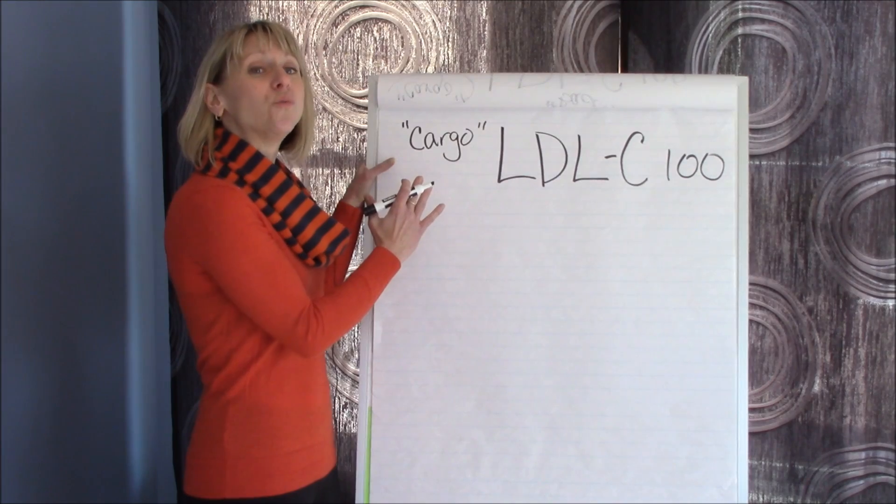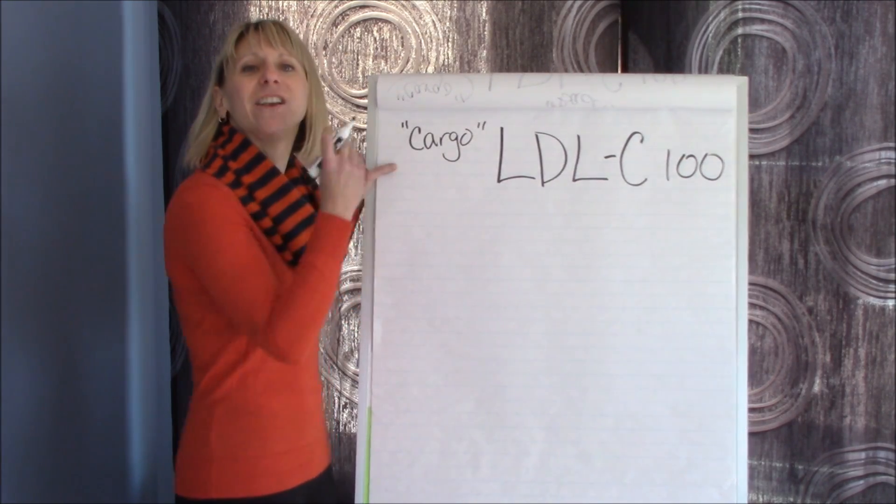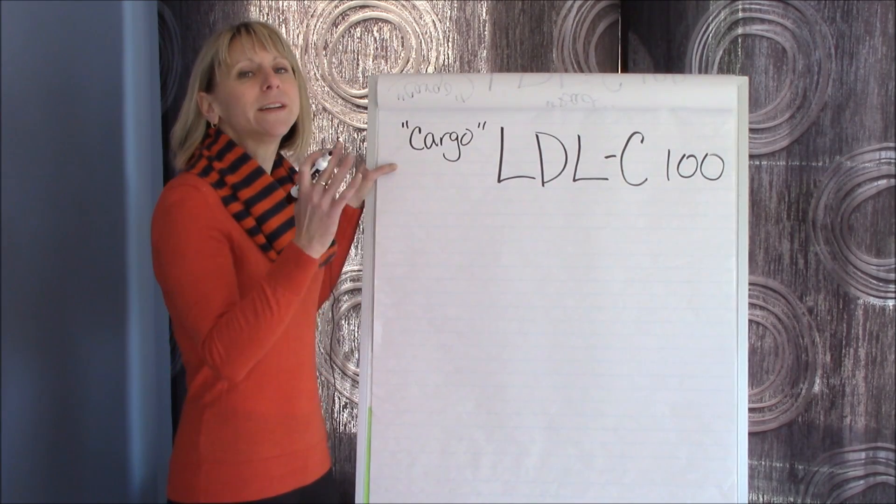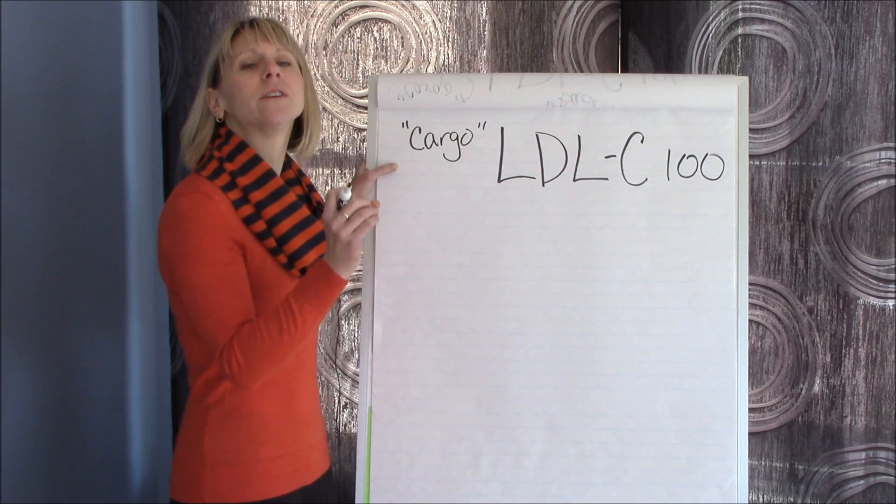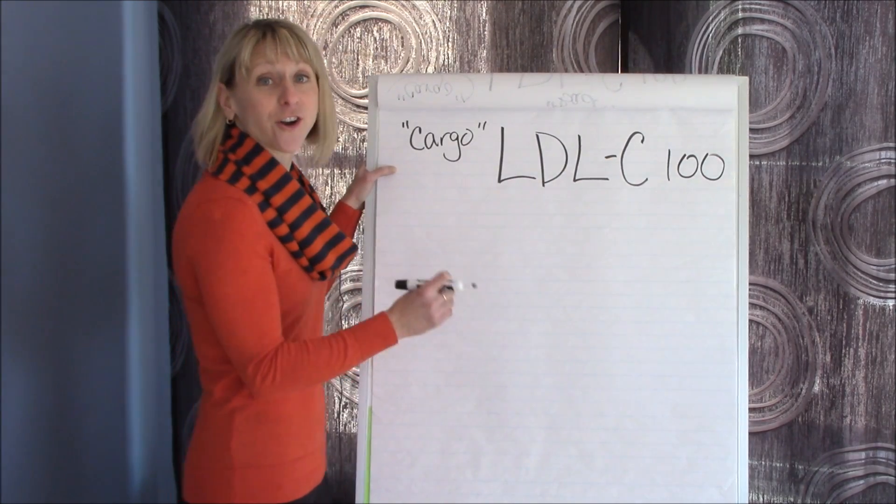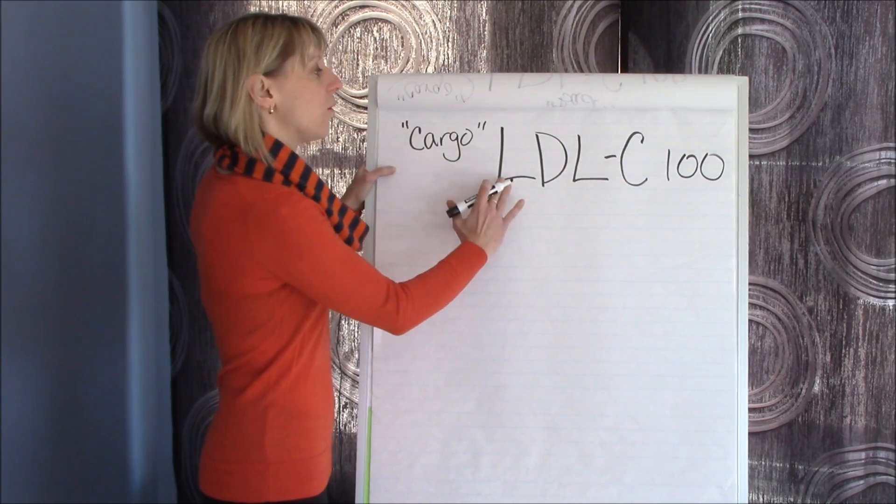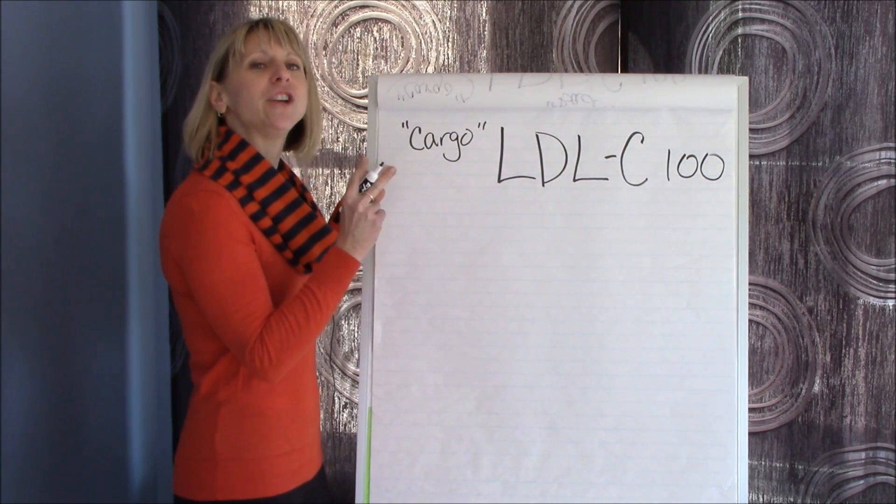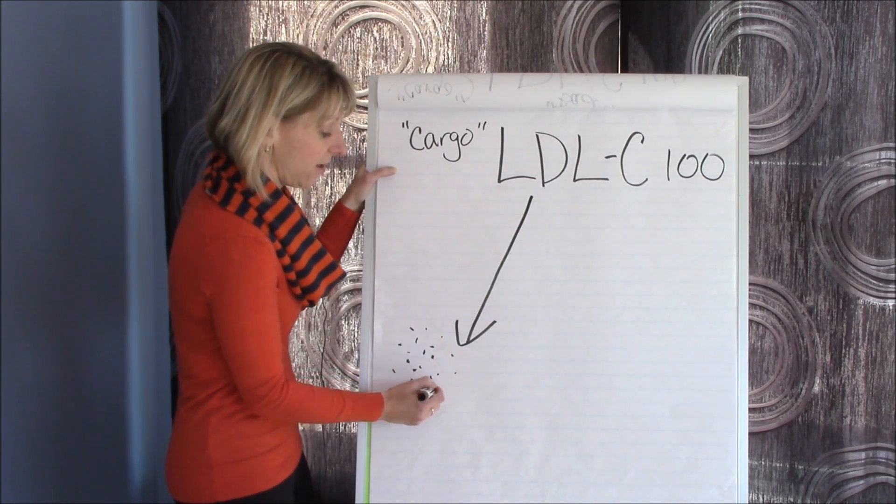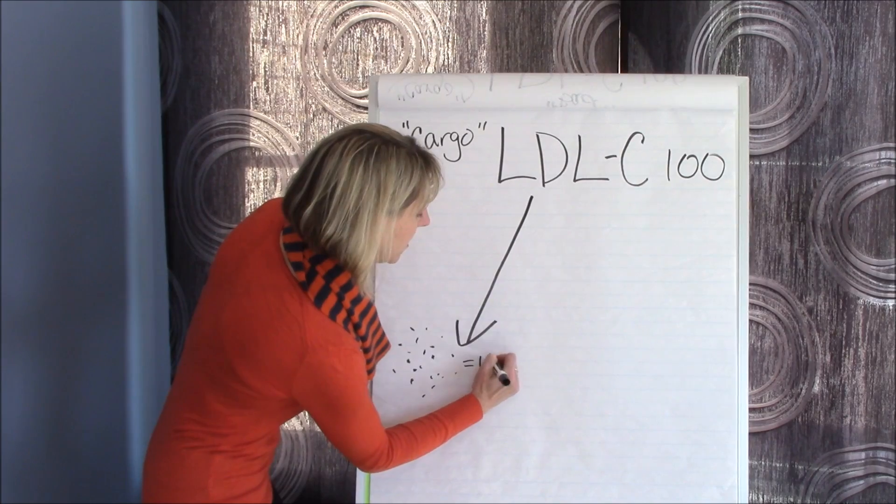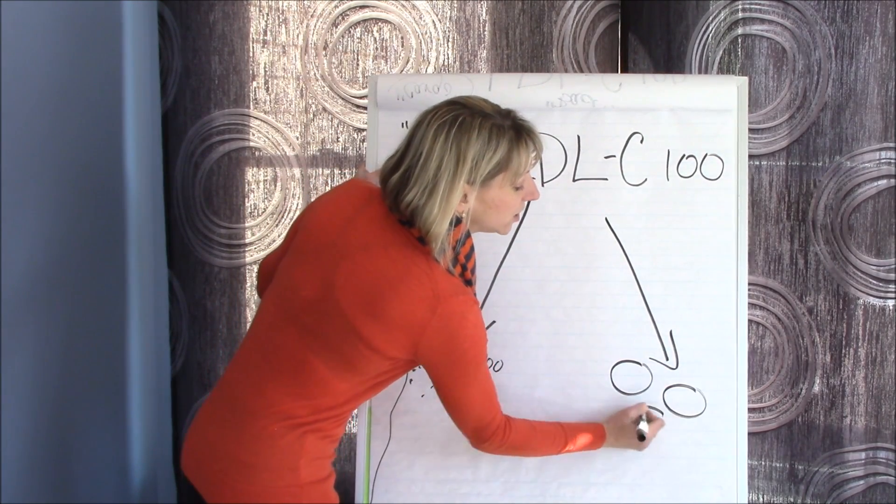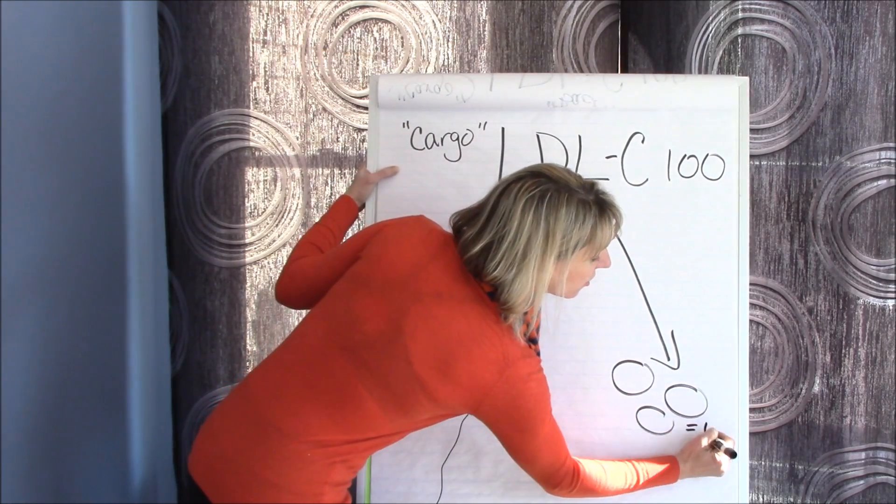The thing about risk is risk doesn't track with the cargo. Cargo or LDL-C is the way we have historically looked at this. Instead what we want to look at is what's important for vascular risk. Vascular risk tracks with the vehicle the cargo is being carried in. A cargo or LDL-C of a hundred can be carried two different ways. It can be carried in many small vehicles, cargo a hundred, or that cargo can be carried in just a few large vehicles. But again, cargo is still a hundred.